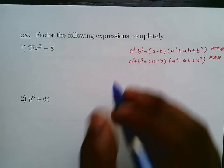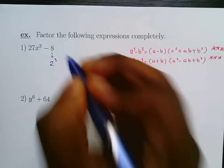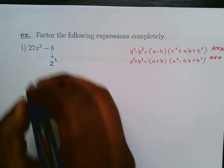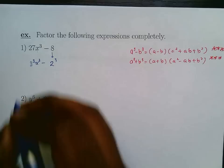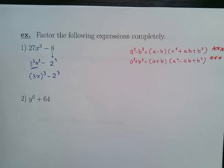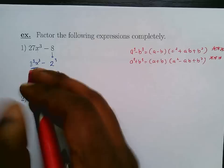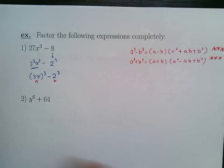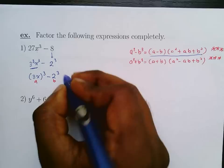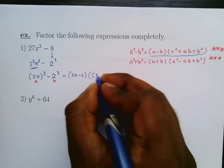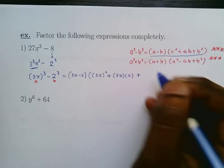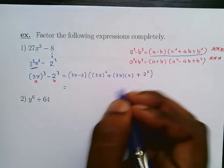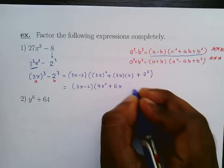The first example is difference of two cubes. 27x³ - 8: note that 8 = 2³ and 27x³ = (3x)³. So a = 3x and b = 2. Plugging into the formula: (a - b)(a² + ab + b²) = (3x - 2)((3x)² + (3x)(2) + 2²) = (3x - 2)(9x² + 6x + 4).